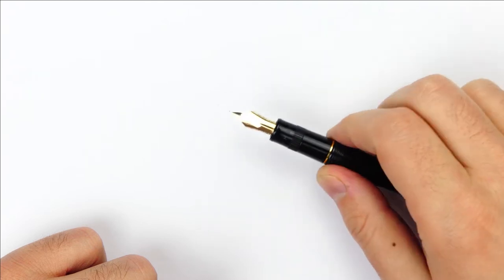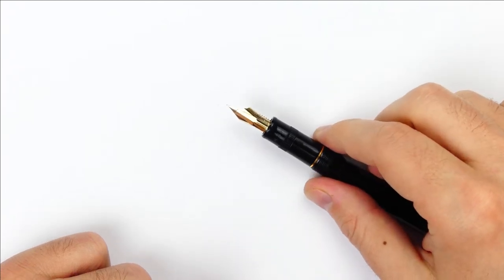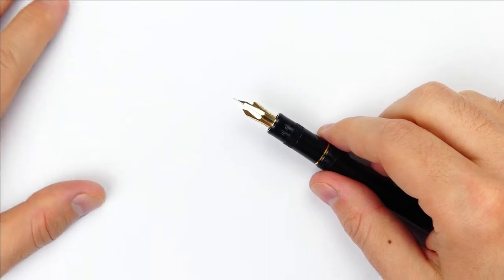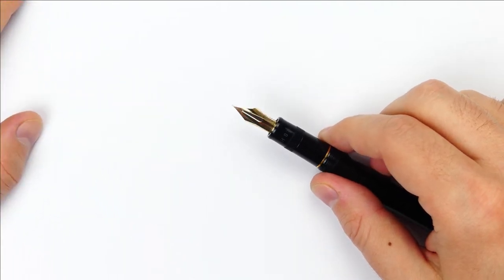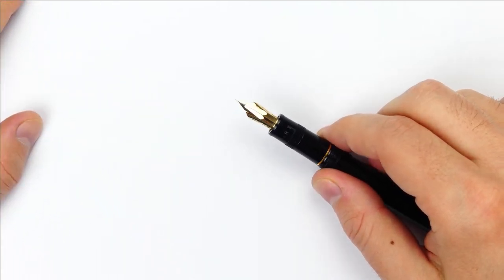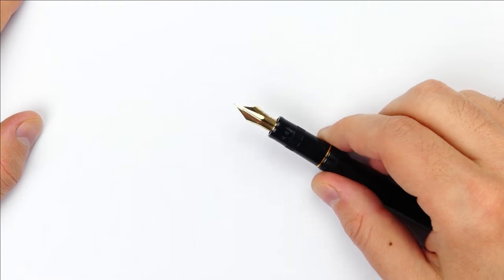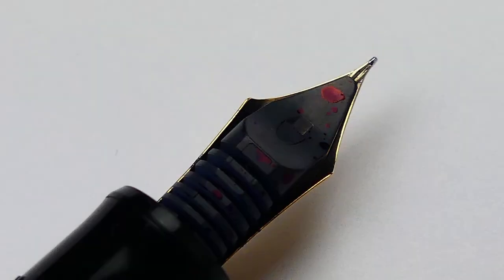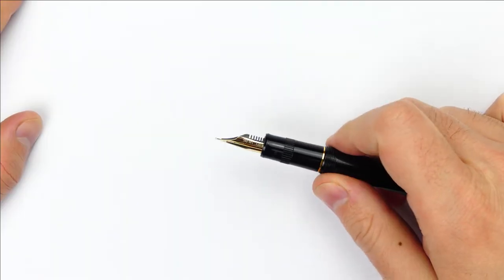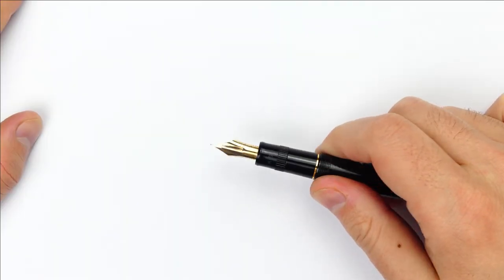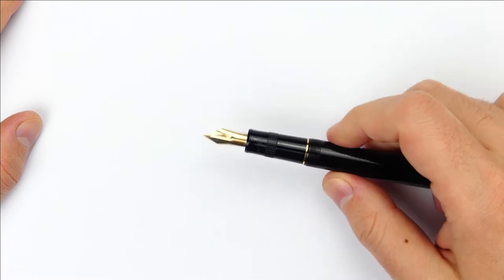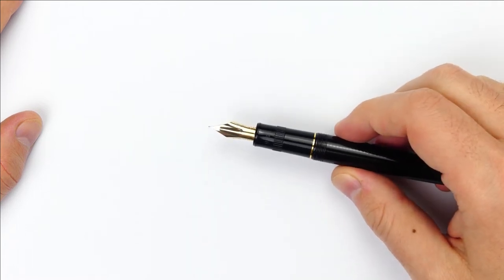The nib is a number 10 with the Japanese standard, meaning that it is just a little bigger than the number 5 western nib, but it is smaller than the number 6. And here we have the classic Pilot plastic feed. I think that you can choose two types of nib, fine or medium, but maybe there is a third one, fine medium.